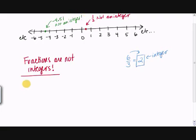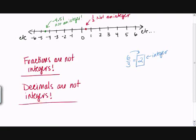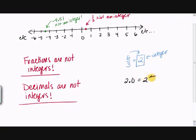So decimals are not integers. Now again, you have to be careful with this. If I give you something like 2.0, 2.0 is equal to 2. This is an integer.